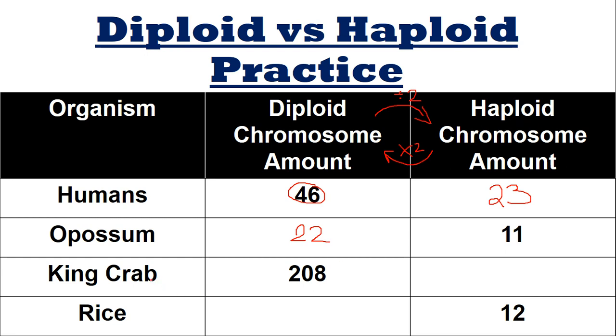King crab. We have a diploid amount of 208, so we're going diploid to haploid — we divide by two. Divide by two, you get 104.